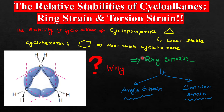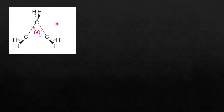Ring strain is basically divided into two parts: the first part is called angle strain and the second part is called torsional strain. I will describe angle strain and torsional strain using cyclopropane as an example. The structure of cyclopropane comprises three carbon atoms, which form a plane, and the CCC bond angle between them is 60 degrees.